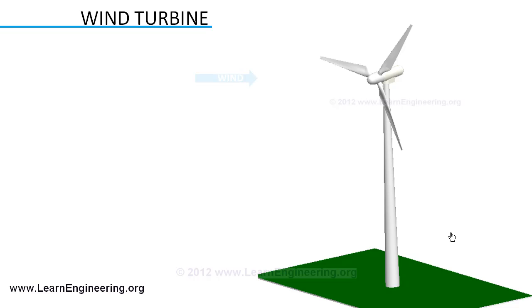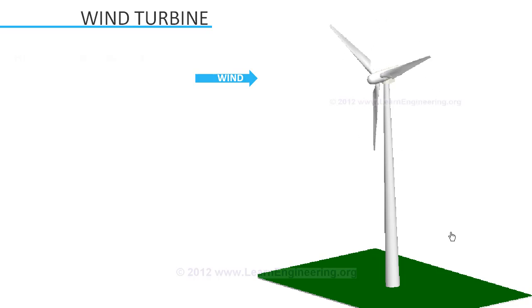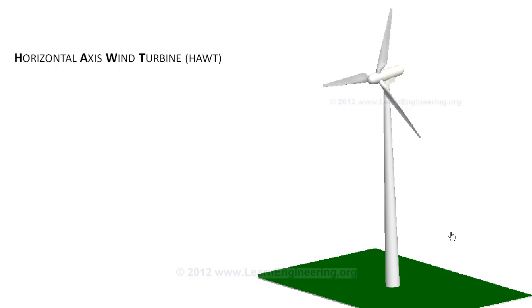Wind turbines extract kinetic energy from wind and transform it to electricity. In this video we will learn the working principle of horizontal axis wind turbine, which is the most commonly used one.